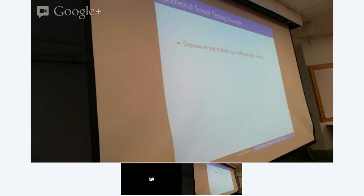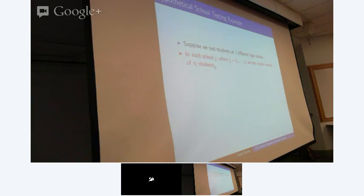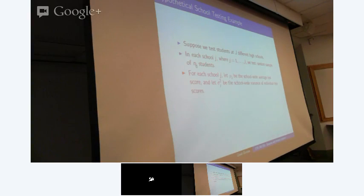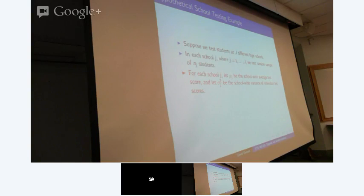The school testing example is the easiest to think about. Say we test students at J different high schools. In each school j, where capital J is the total number of schools and little j indexes the school, we get a random sample of N_j students. Students are nested within schools, so we have a sample size specific to each school. For each school j, let's say we just get a test score for each student, and the average test score in school j is mu_j, while sigma_j squared is the variation in test scores for students in school j.